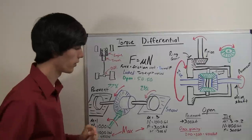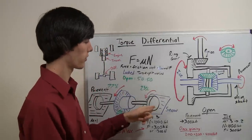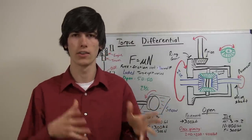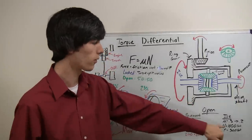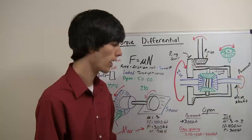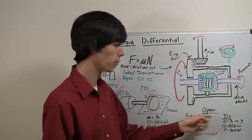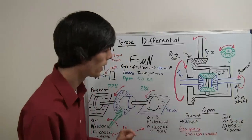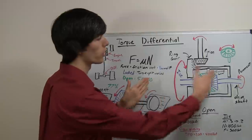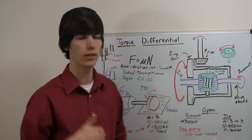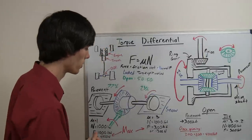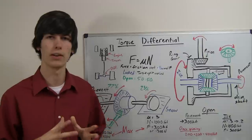Over here with the locked differential our maximum was 1,300 pounds. Now there's another problem: once this tire starts spinning on the snow, the frictional coefficient goes down. Something that's already sliding can slide easier than something that isn't sliding. So once the force on the ice-side tire exceeds 300 pounds, it starts to spin, and the frictional coefficient drops to 0.2 — so the maximum force you can then put onto the ground is 200 pounds. The maximum total then becomes 400 pounds of force, because you've got 200 on each side — versus 1,300 pounds with a locked differential.